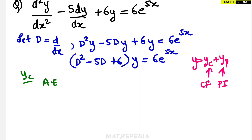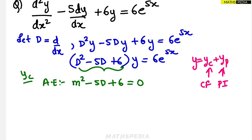To find yc, we form the auxiliary equation by replacing D with m and equating the left-hand side to zero: m² − 5m + 6 = 0. We only consider the LHS for yc; the RHS is not needed here.